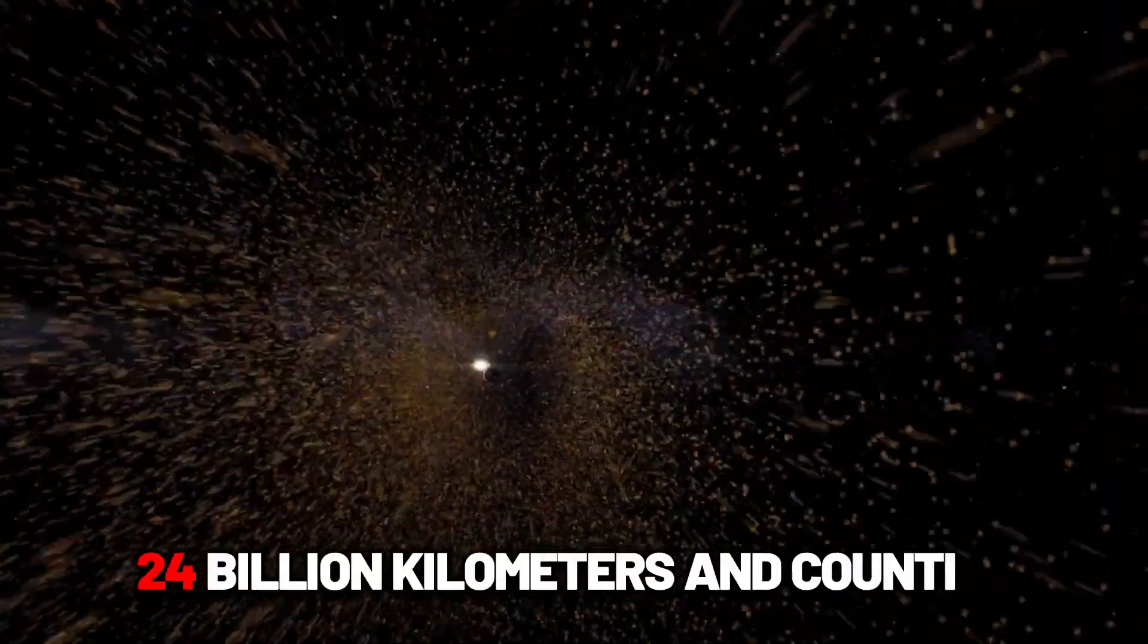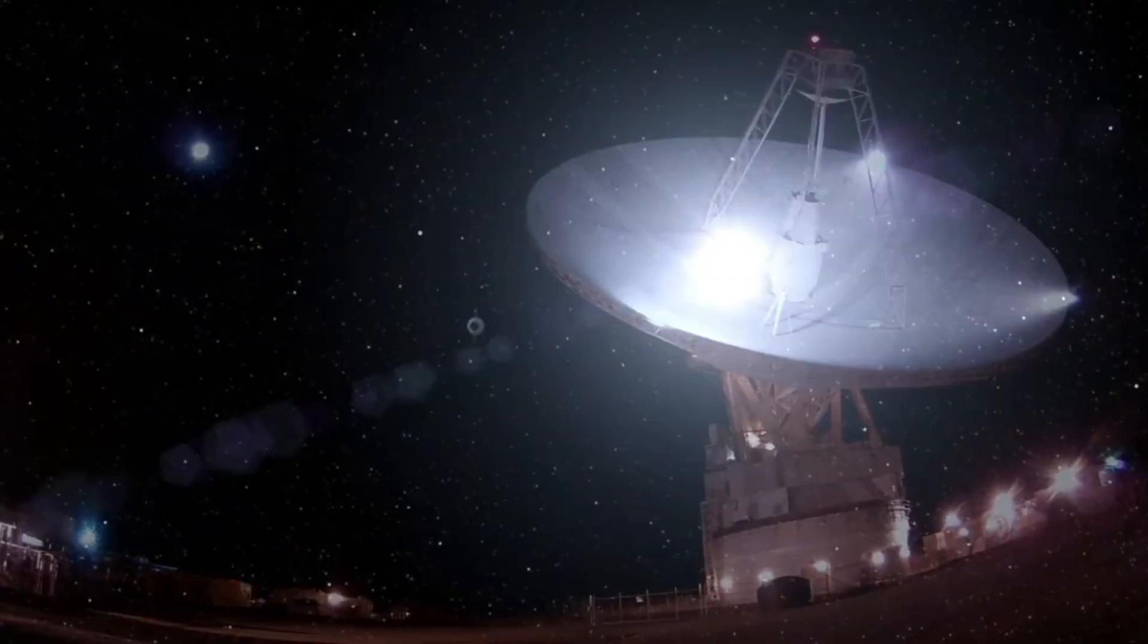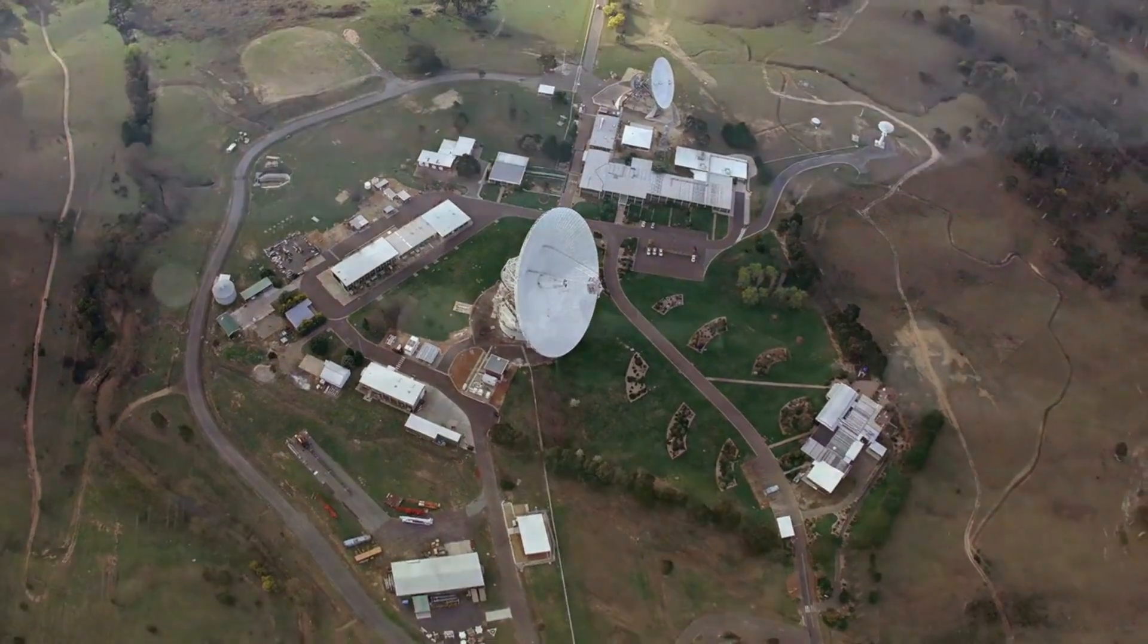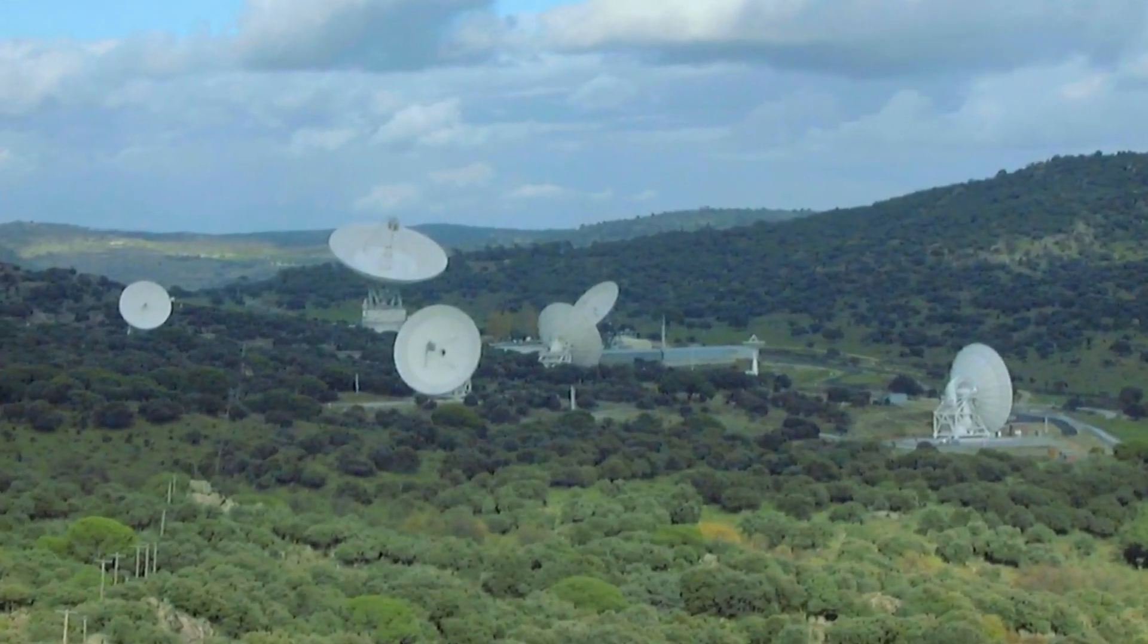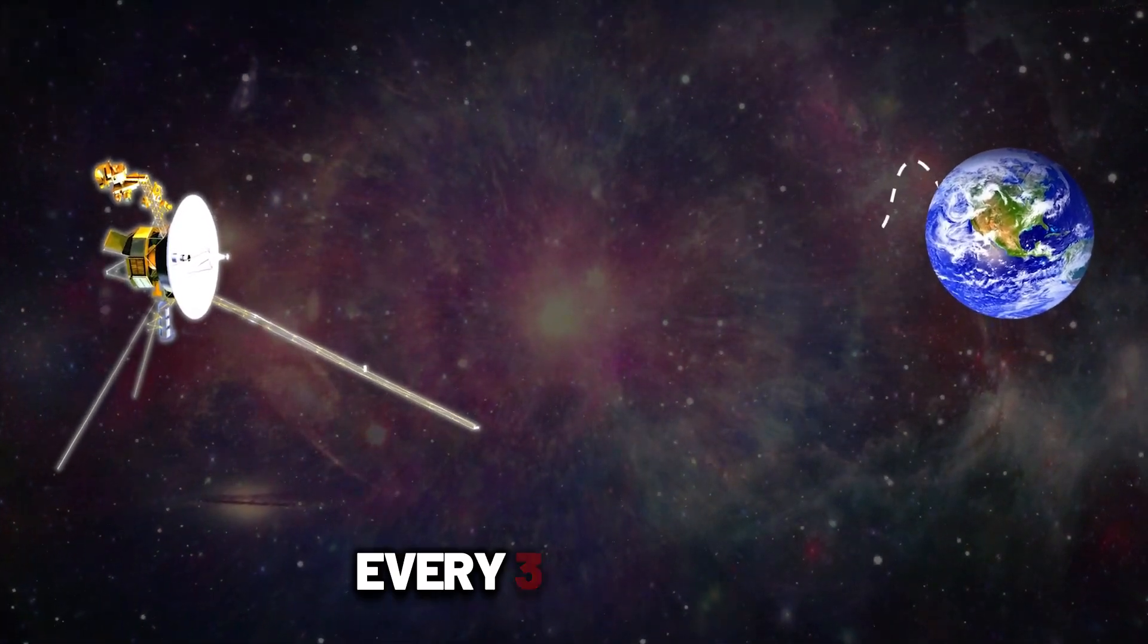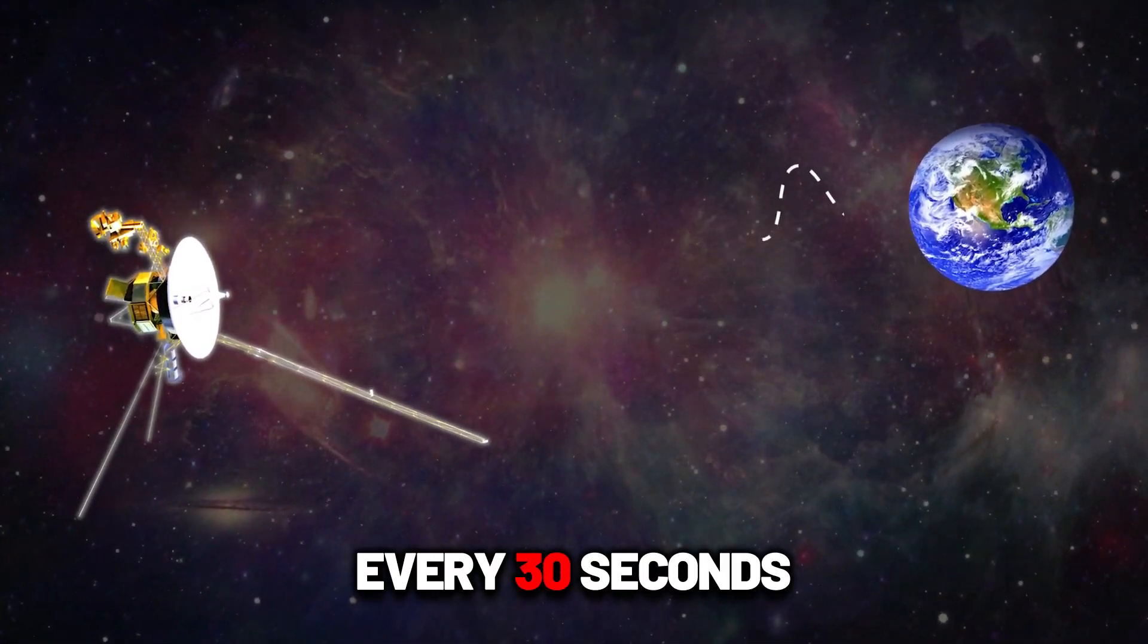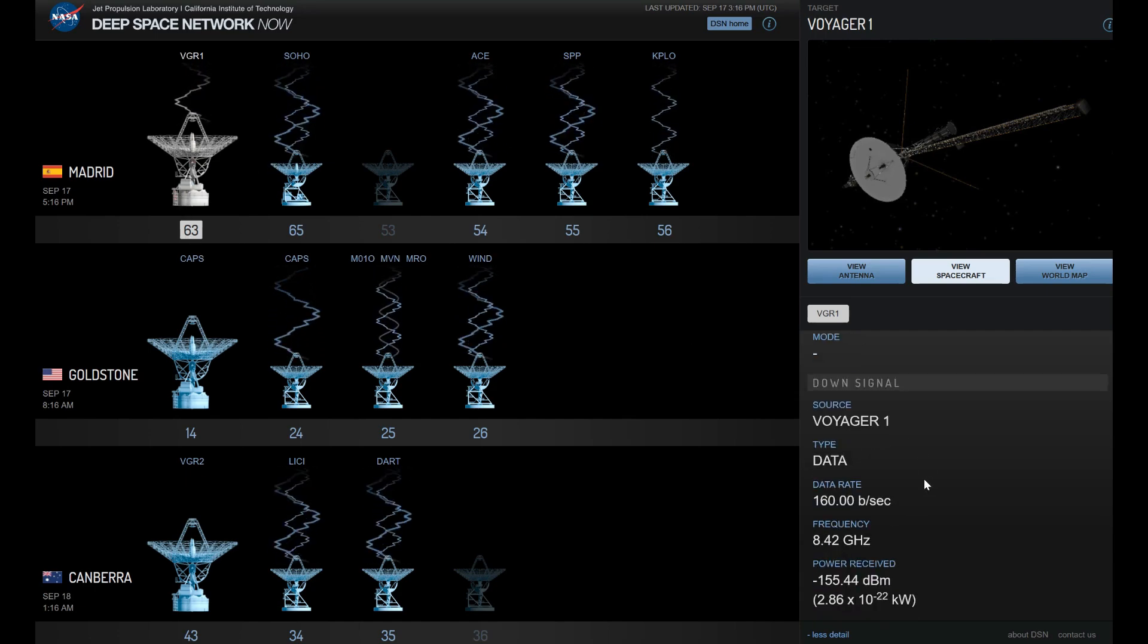And despite the staggering distance, 24 billion kilometers and counting, Voyager's signal still reaches us. We catch it using NASA's Deep Space Network, a global array of enormous radio dishes, some as large as football fields, tuned to pick up the faintest flickers of light. Voyager 1 sends a photon, a single particle of light, every 30 seconds. That's it. That's the signal, just a whisper in the dark. But what a whisper it is.